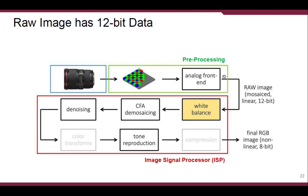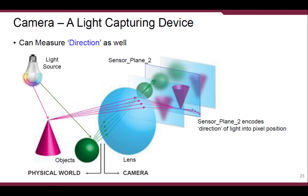When it comes to image processing and computer vision, we always start with RGB images with 8-bit data. But actually, raw image data has 12-bit data. So if you do compute on-sensor, you can make use of the extra photonic information on-sensor. A camera can also measure the direction of light. If we slightly move the sensor plane backward and place a small optical element between the lens and the sensor plane, the sensor plane encodes the direction of light into pixel positions.